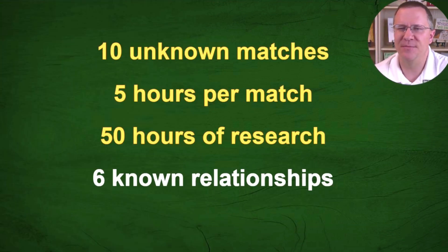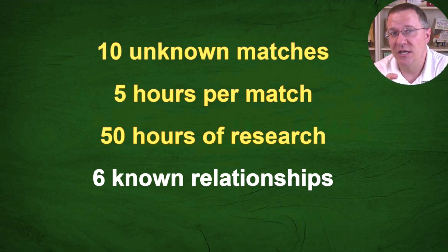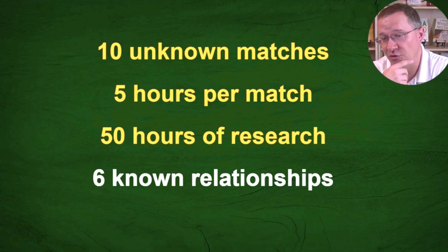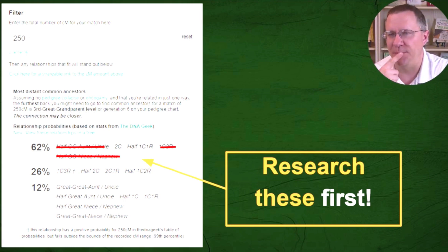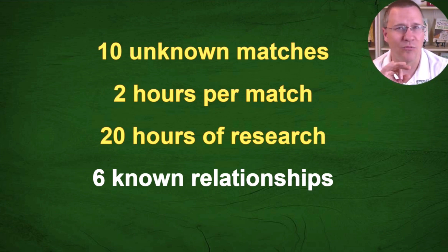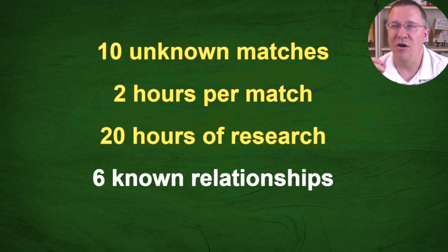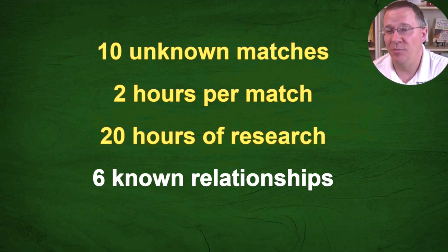With 10 unknown matches, if I've only spent five hours per match — one hour per each of the top relationships — that's 50 hours of research total, and I found six of the known relationships. So I've spent less than a third of the hours to find more than half of the relationships. What if I can eliminate some of those relationships right off the bat because of age or knowing that a generation didn't test? Narrowing that down to two relationships means only two hours per match — 20 hours total — and I've still found the same six known relationships. Not all possibilities are equal, and we need to prioritize.